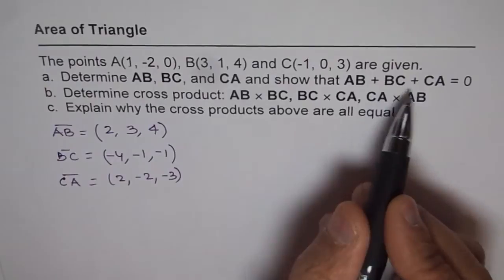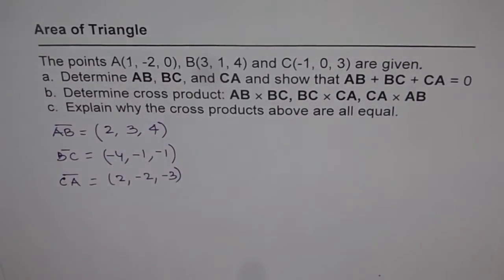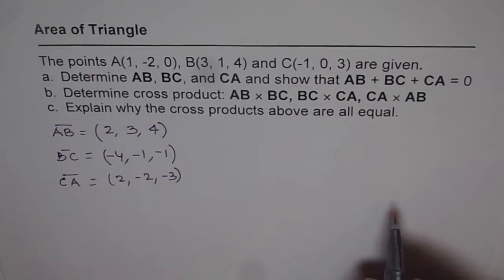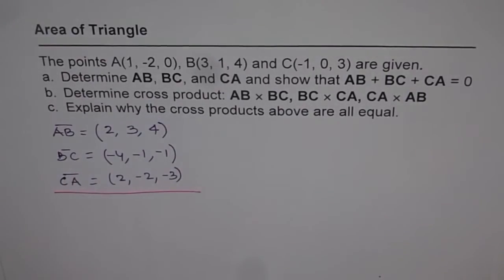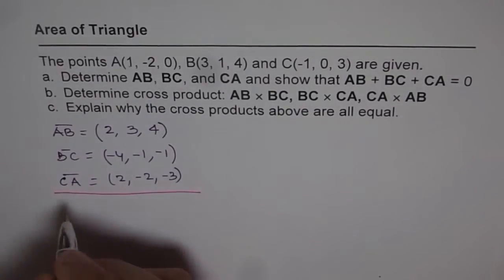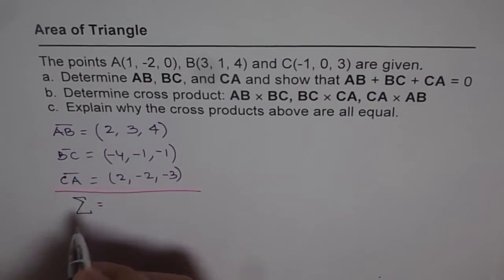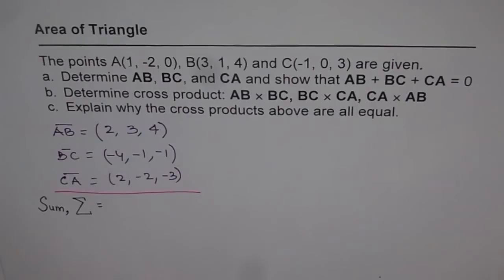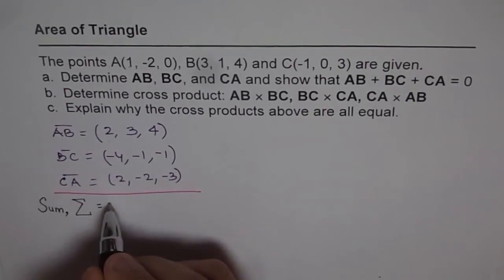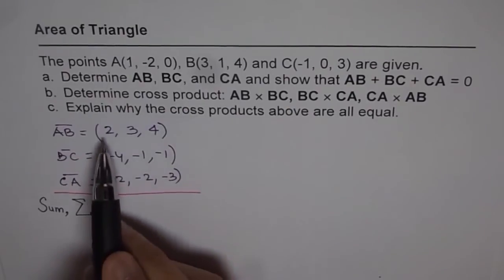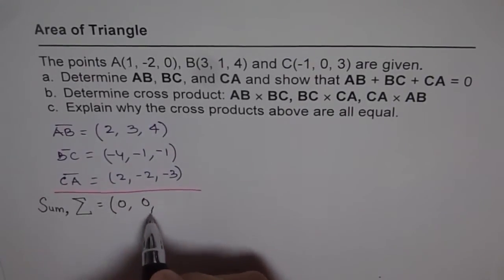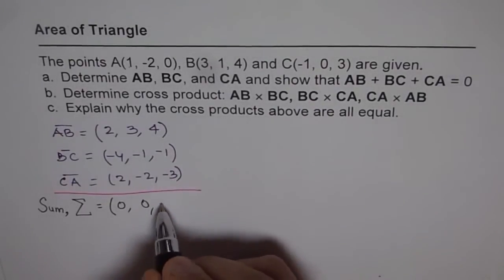Now we need to show that the sum of AB, BC, and CA is 0. Let's check it by adding them up. The sum of the first components: 2 minus 4 plus 2 is 0. The second components: 3 minus 1 minus 2 is 0. And 4 minus 1 minus 3 is also 0. So I get the zero vector by adding them all.